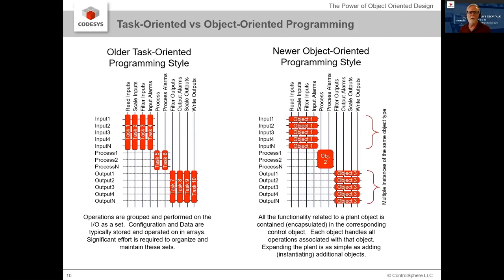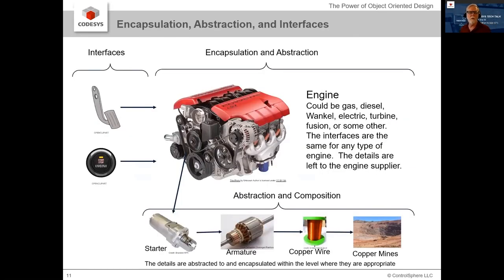The centralized task approach was a big advancement, but it suffered from the need to modify each new member and made it difficult to see the whole flow of information and the cause-and-effect relationship in the control code. Object-oriented industrial programming turns that task-oriented approach on its side. Instead of all the functions being spread out amongst many tasks, the functionality is contained inside each object. A single object performs everything associated with that input — it reads, scales, filters, and does all alarming on the input. When you need another input, you just create another instance.